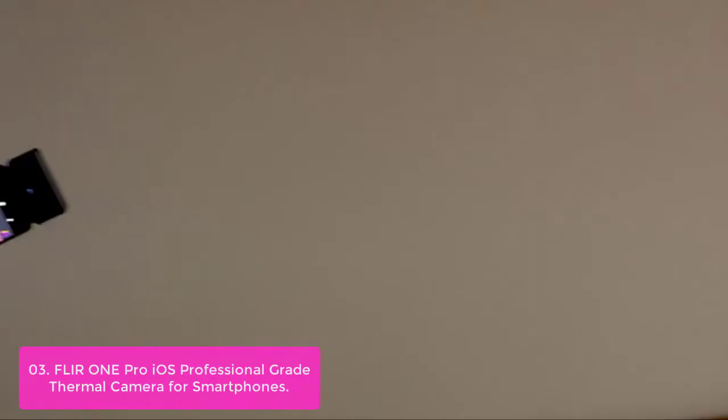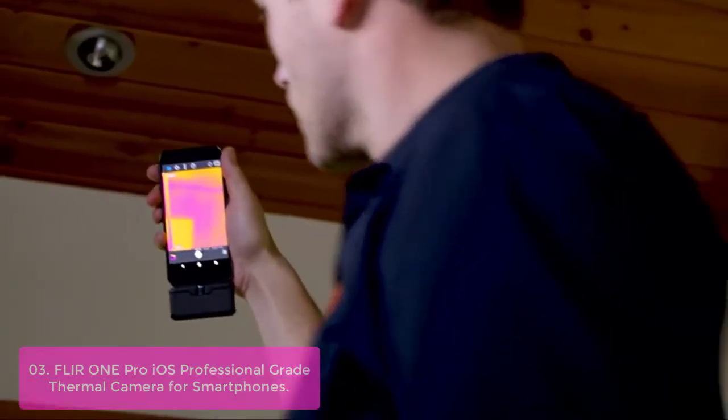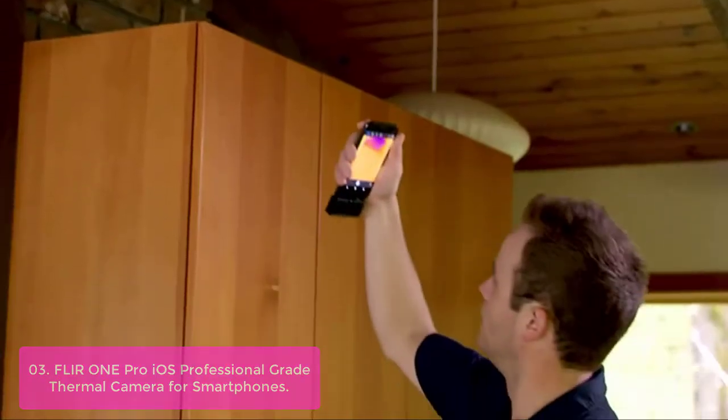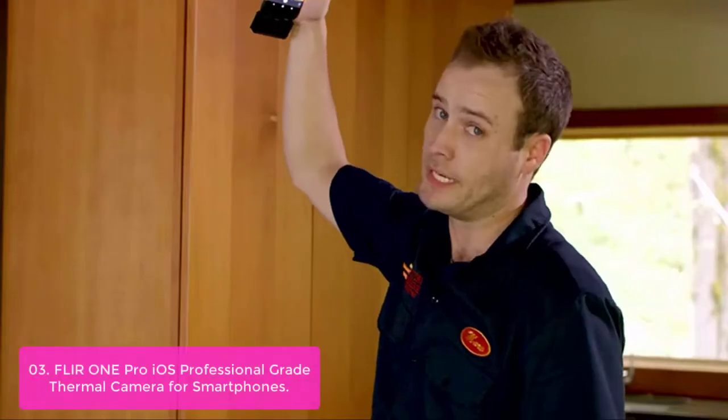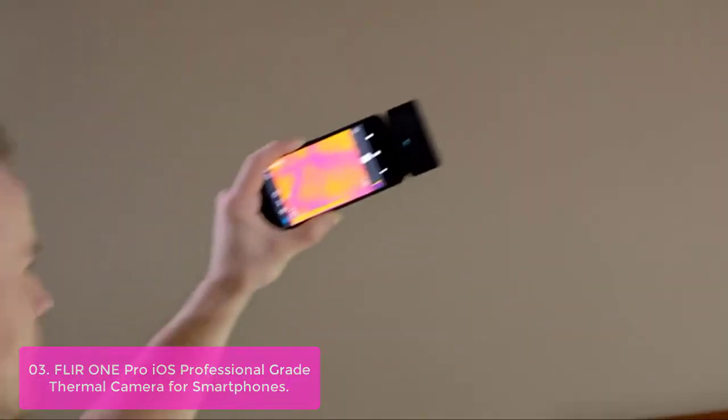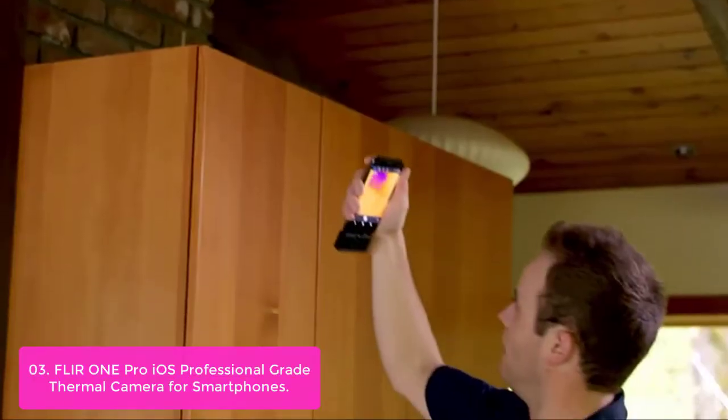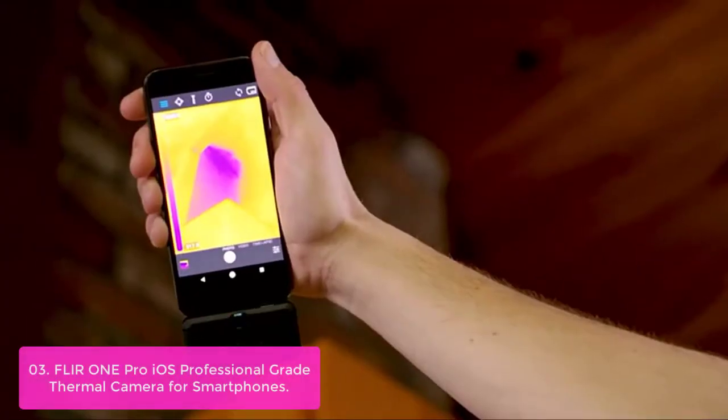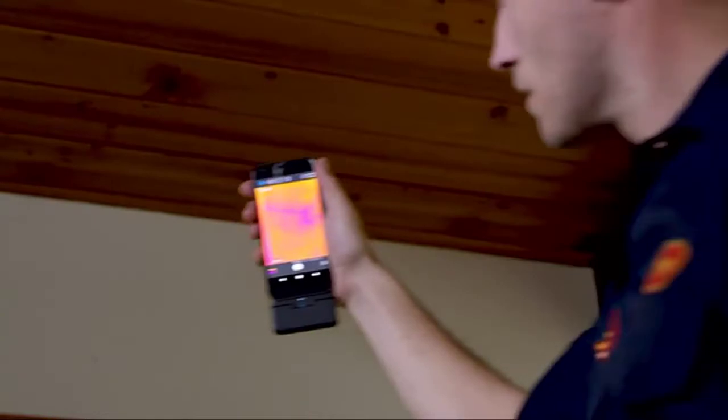List number 3. FLIR 1 Pro iOS Professional Grade Thermal Camera for Smartphones. The FLIR 1 Pro is a revolutionary thermal imaging camera for mobile devices. You can now find hidden electrical problems, energy loss, water damage, and other heat-related issues with these. With a 4x improvement over the FLIR 1 Pro LT, at a thermal sensitivity of 70 mk compared to a maximum of 120c for the FLIR 1 Pro LT, with up to 3 spot temperature meters and 6 temperature regions of interest, you have never seen thermal imaging used like this before.